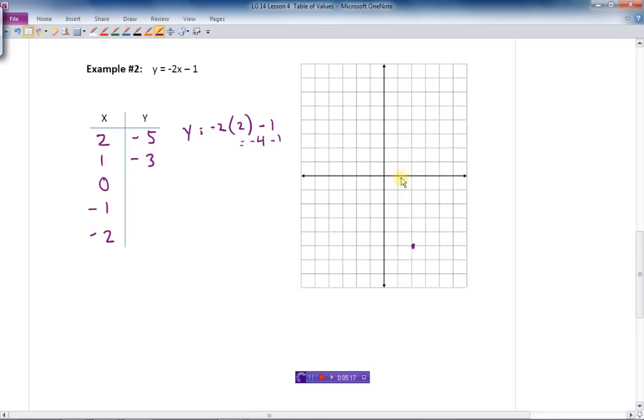So 1, down 3. There is our next point. Let's do 0. 0 is an easy one. 0 gives me 0, 0 minus 1 is negative 1. And so 0, negative 1 is right there. Negative 1 stuck in there.